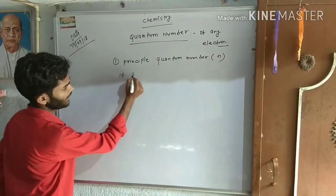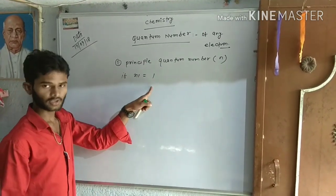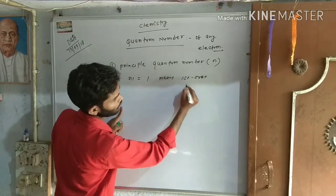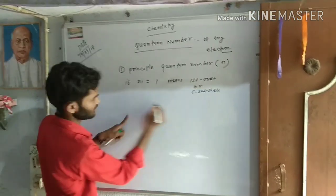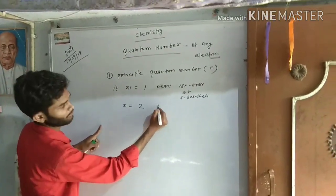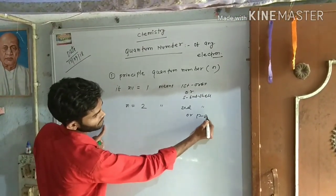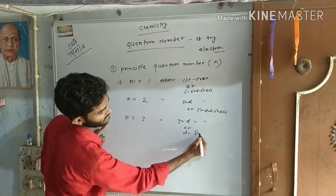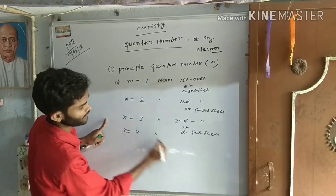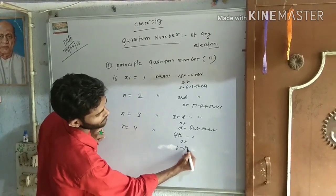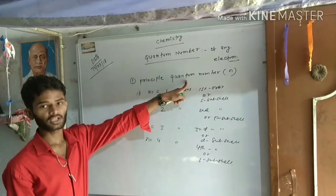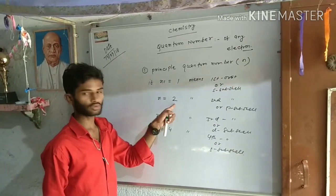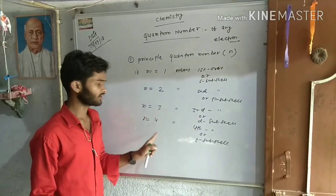जब n=1, means first orbit, and s subshell। जब n=2, means second orbit, and p subshell। जब n=3, means third orbit, and d subshell। जब n=4, means fourth orbit, and f subshell। यह बताता है principal quantum number — number of orbit के बारे।